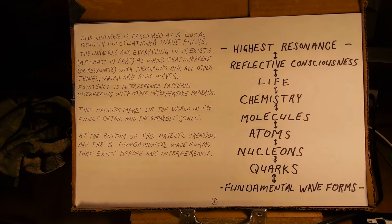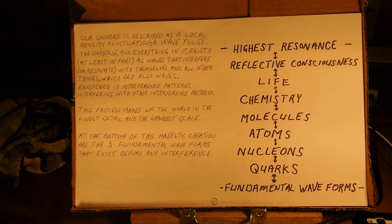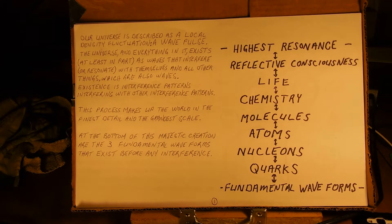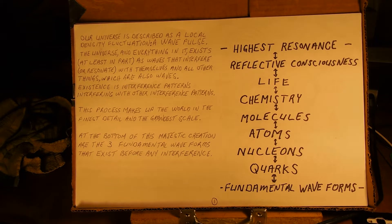Our universe is described as a local density fluctuation, a wave pulse. The universe, and everything in it, exists at least in part as waves that interfere or resonate with themselves and all other things, which are also waves. Existence is interference patterns interfering with other interference patterns. This process makes up the world in the finest detail and the grandest scale.